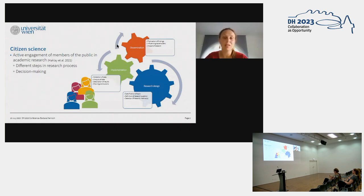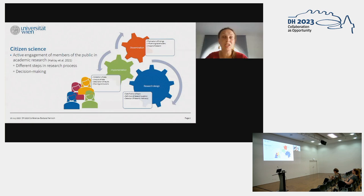Regarding dissemination, participants might also be involved in the publication of findings and helping to inform public policy. In its most comprehensive form, citizen science means that participants are also involved in decision-making in the research process itself, for example, which methods should be used.